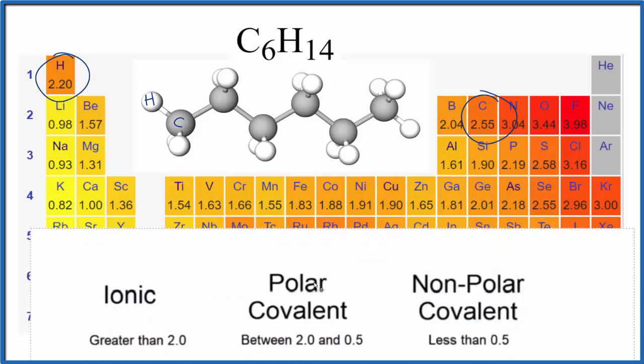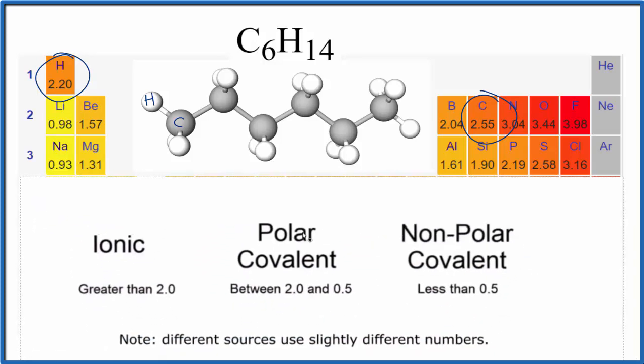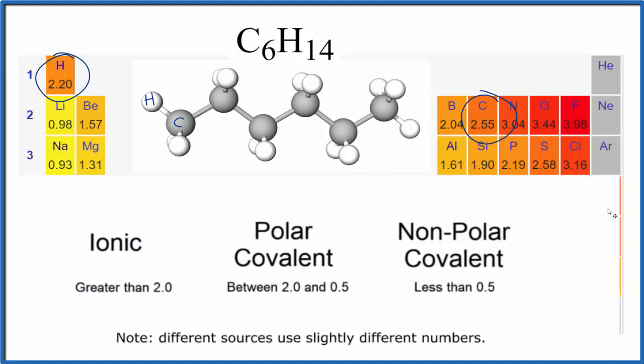We use this general rule of thumb here to look at electronegativity differences to figure out whether we have a polar or nonpolar molecule. And if the difference is less than 0.5, we have a nonpolar covalent compound.